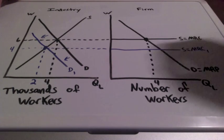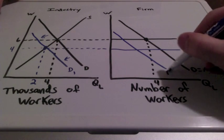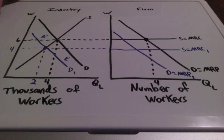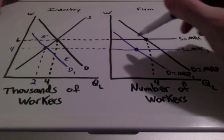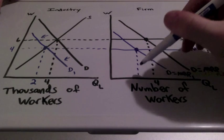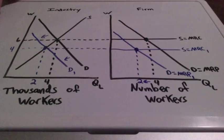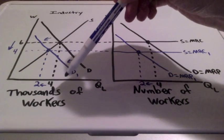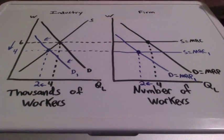Since the demand of labor is going down for the industry, it will also decrease for the firm, and demand equals marginal revenue product 1. We find where marginal resource cost equals marginal revenue product — this is our new intersection. The firm will decrease the number of laborers from 4 to 2 because the industry's demand curve shifted to the left. Wages went down from $6 to $4 per hour, and the number of workers decreased from 4,000 to 2,000. When we have a decrease in demand for perfectly competitive labor markets, wages will go down, and so will the quantity supplied of labor.